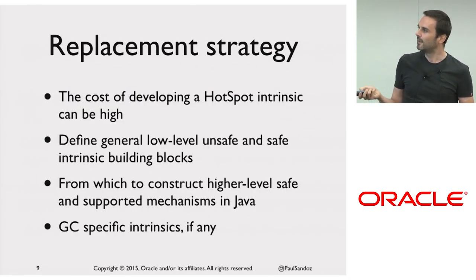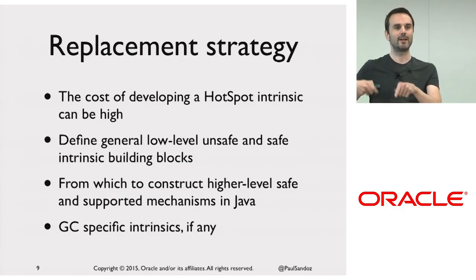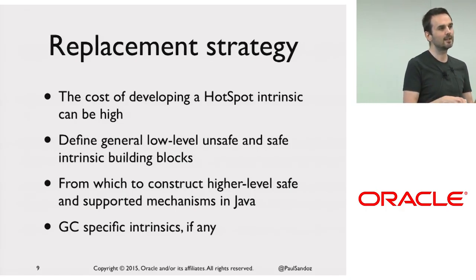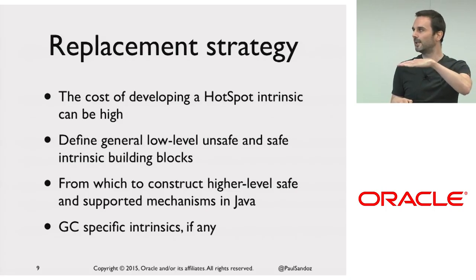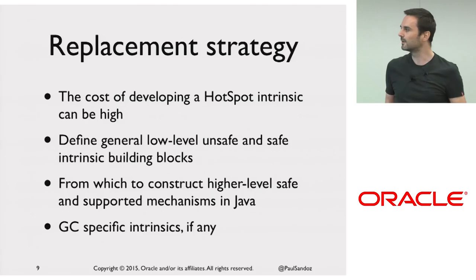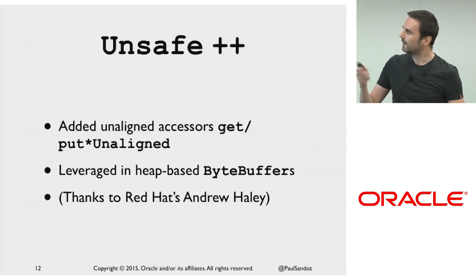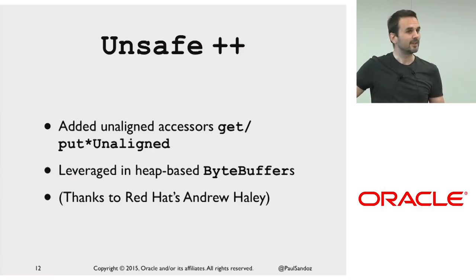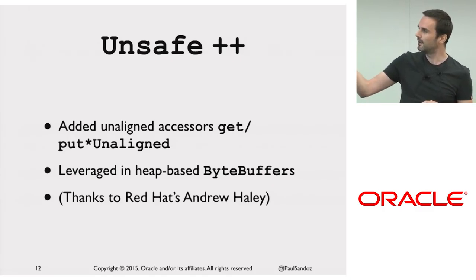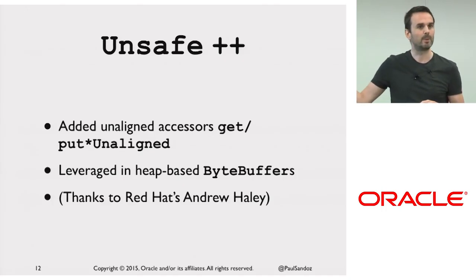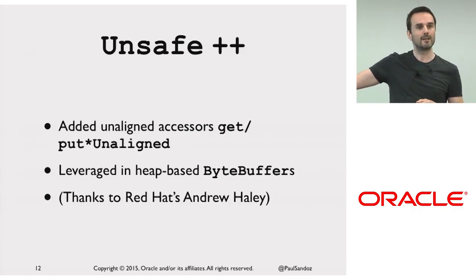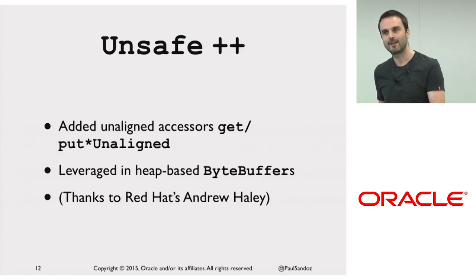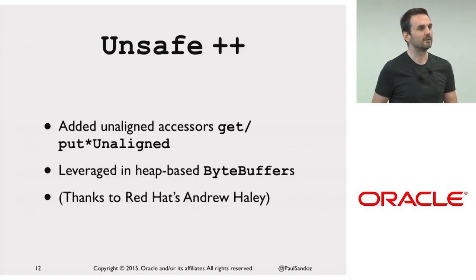There's a replacement strategy: I want to hunt for the right hotspot intrinsic, the most general one I can reuse in lots of little other places. You've seen that applied to what Vladimir talked about with lambda forms — there's a very nice divide between the JVM and the JDK layer. Some methods have already been added to unsafe by Red Hat's Andrew Haley: get and put unaligned methods, leveraging byte buffers to improve performance. They're intrinsics, but on an unaligned architecture like SPARC, it drops down into a little branchy code.